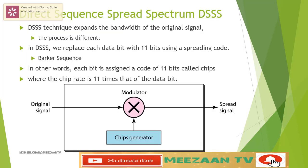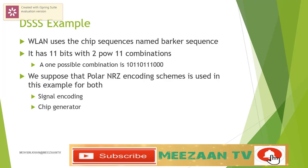The Direct Sequence Spread Spectrum (DSSS) technique also expands the bandwidth of the original signal, but the process is different. In DSSS, we replace each data bit with 11 bits using a spreading code. In other words, each bit is assigned a code of 11 bits called chips, where the chip rate is 11 times that of the data bit. In a wireless LAN, the famous Barker sequence is used. This sequence is 11 bits and spreads the spectrum 11 times.